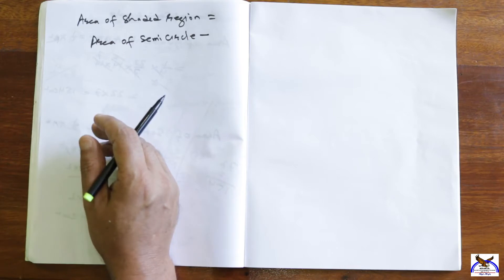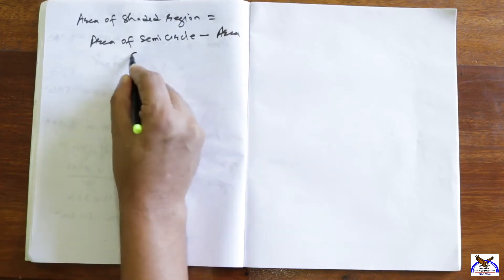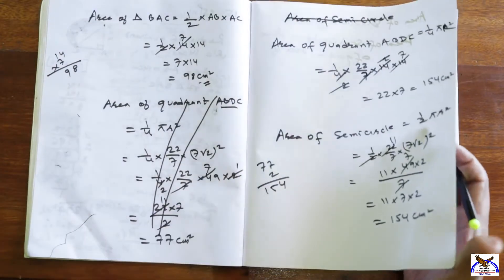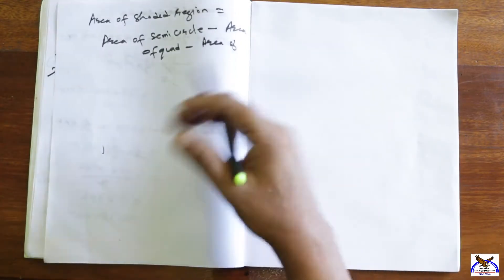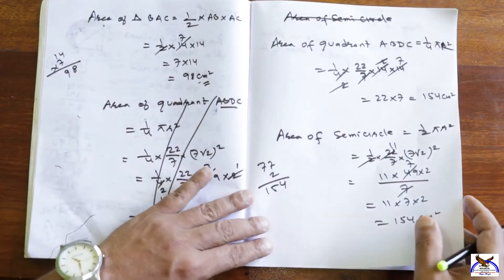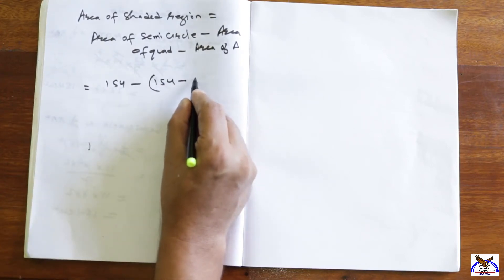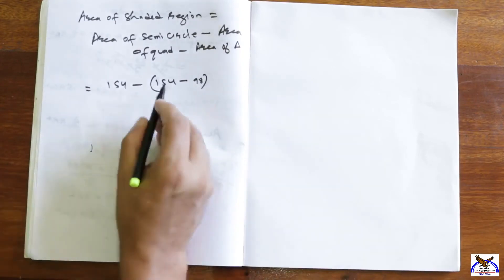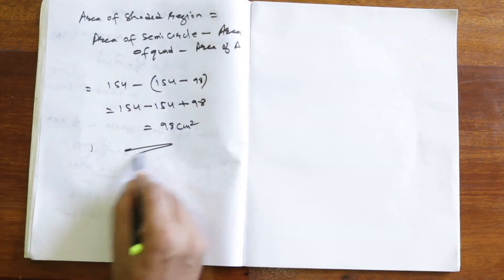Area of shaded region equals area of semicircle minus (area of quadrant minus area of triangle BAC). That is 154 minus (154 minus 98) equals 154 minus 56 equals 98 cm².